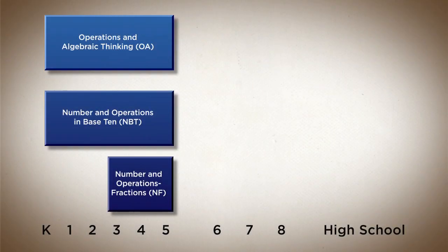The Common Core Standards focus on number and operations in early grades. Number and operations is usually a single strand in state standards, but in the Common Core Standards there are three domains in this area: operations in algebraic thinking, number and operations in base 10, and number and operations with fractions.